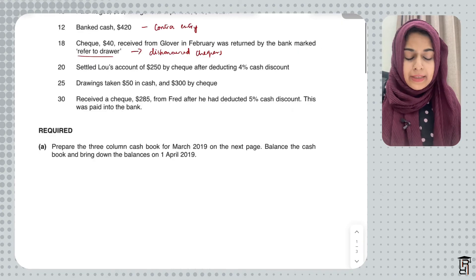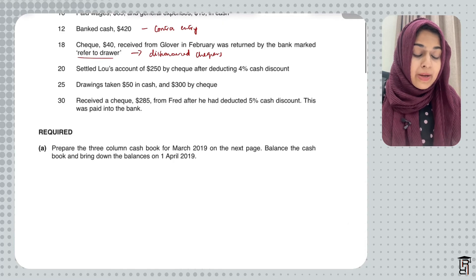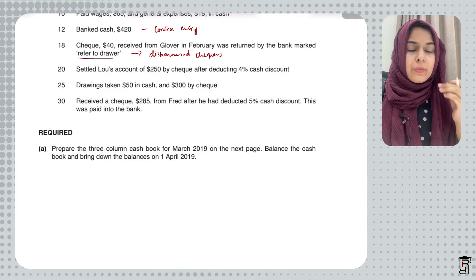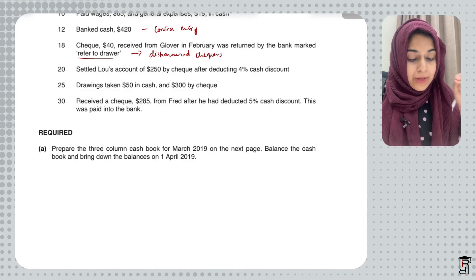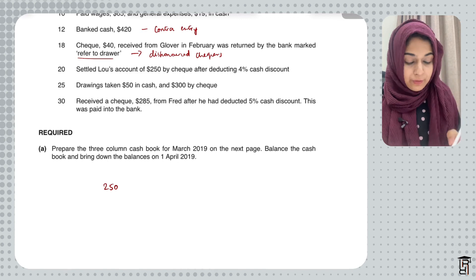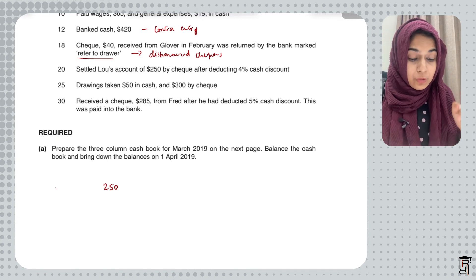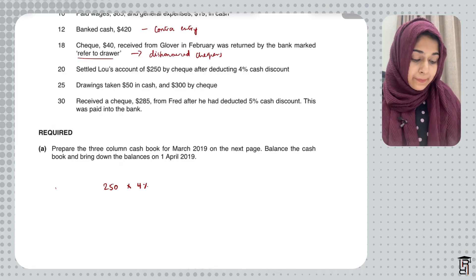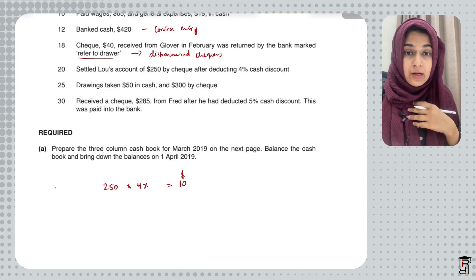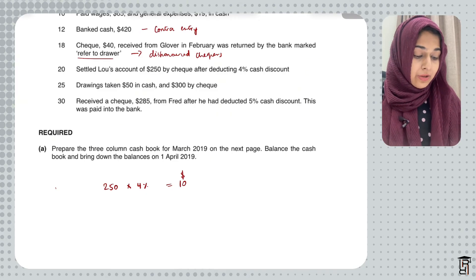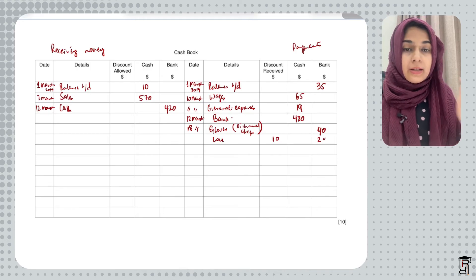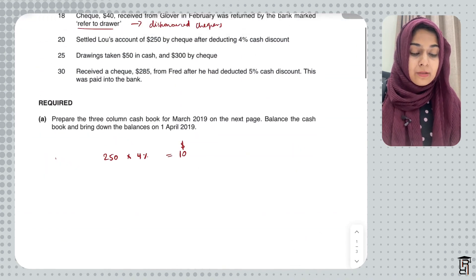On 20th March, settle Lou's account of $250 by check after deducting 4% cash discount. Lou is a trade payable — I owe him $250. The 4% discount on $250 gives $10, which is discount received. I record $10 in the discount received column and pay $240 (that is $250 minus $10) by check in the bank column on the credit side.